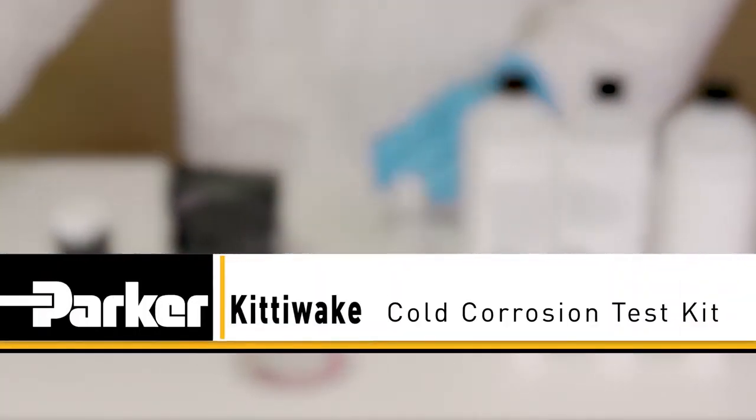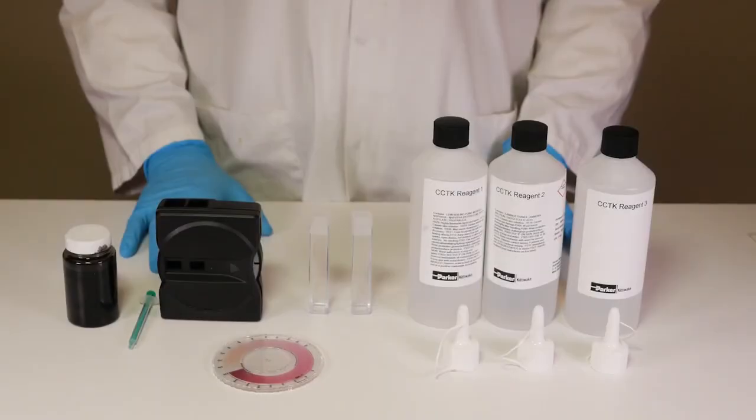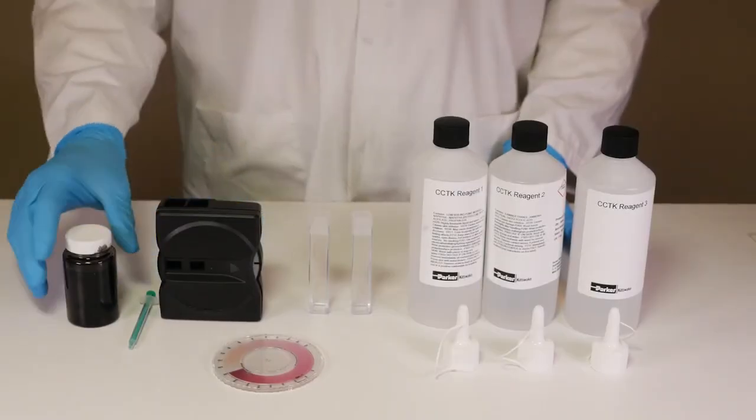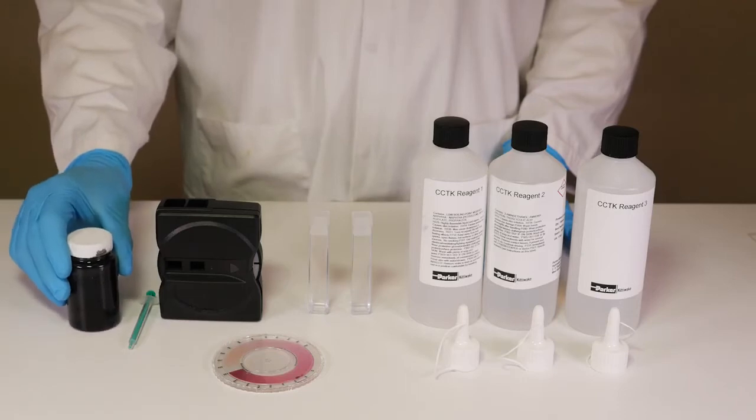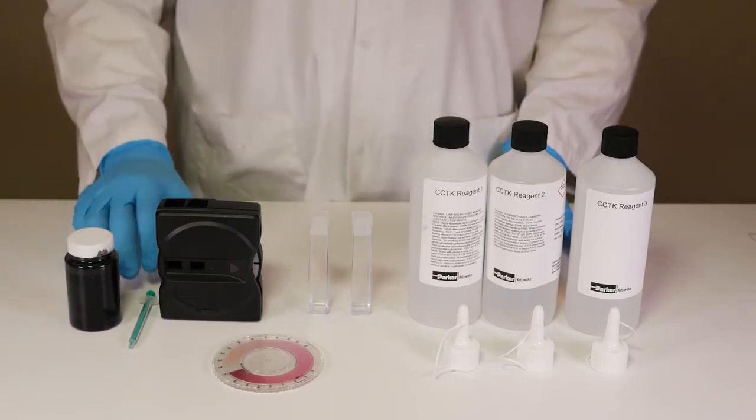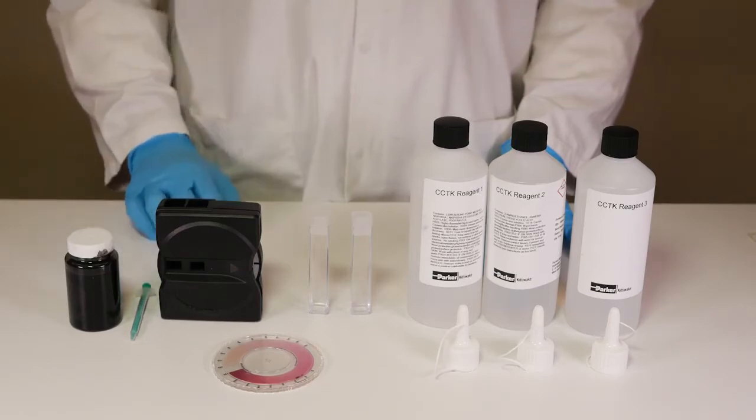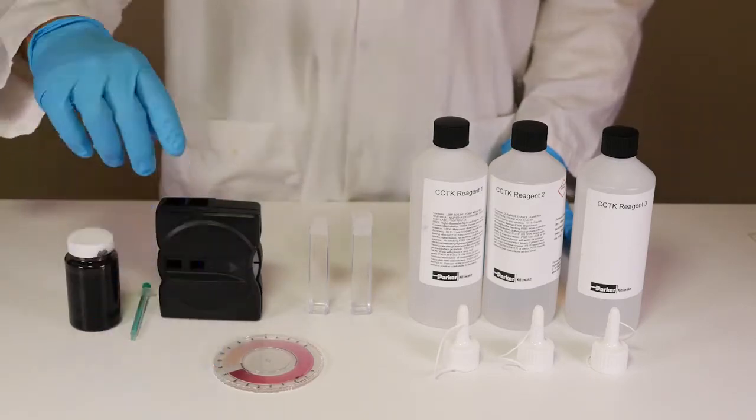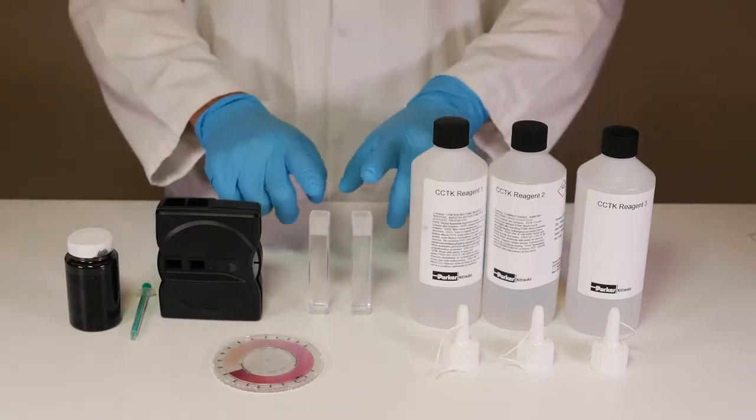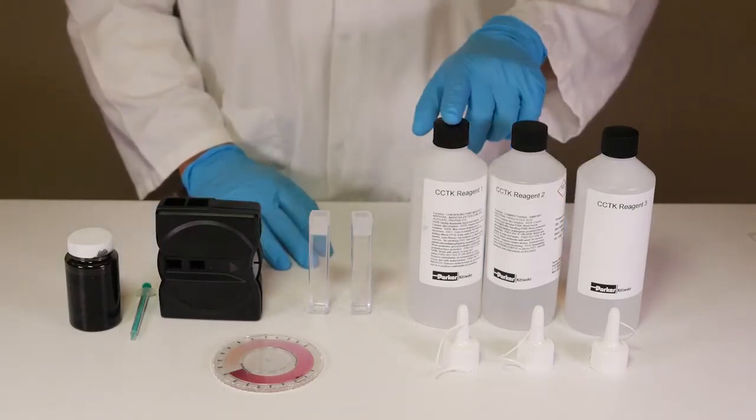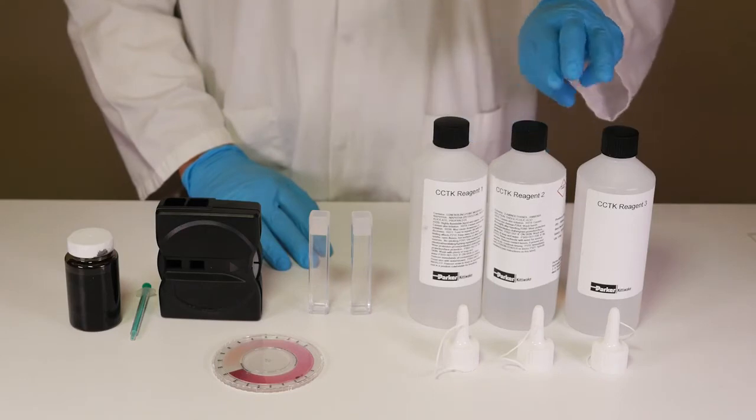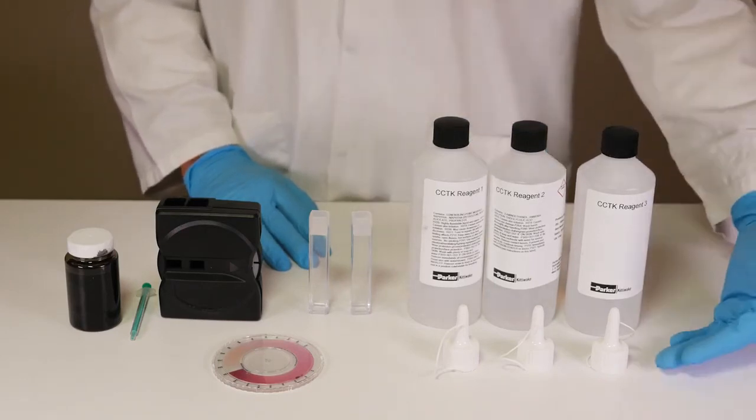To perform a Parker Kittiway cold corrosion test you will require the following: a sample of your cylinder scraped down oil, a one milliliter syringe, a comparator and colour wheel, two cuvettes, reagents one, two and three, and a pouring lid for each.